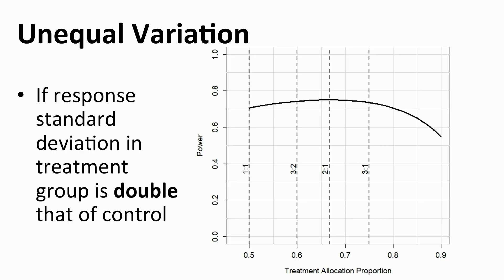However, we need to be careful about our assumptions. Suppose the control arm and the treatment arm don't respond the same way in terms of variation. Suppose the treatment arm not only changes the mean but also changes how much variation there is in the response. Here's an example of a power curve where the standard deviation for the final endpoint in the treatment arm is double that of the control arm. Now the power curve doesn't peak at 50% randomization — the peak actually occurs at 67%, at a two-to-one randomization ratio. What we're trying to balance is not the same number of patients in each arm, but an equal amount of information between treatment and control.